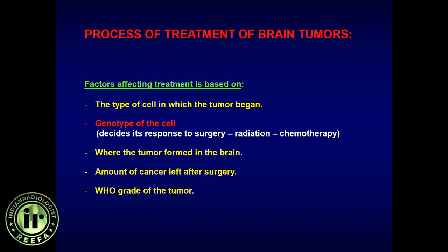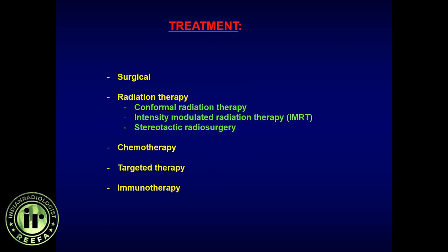The two main determinants of treatment planning and expected outcomes are the WHO histological classification and the genetic code of the tumor. Other factors include the tumor's location in the brain, its proximity to eloquent areas, and how much residual cancer remains after surgery.